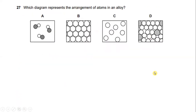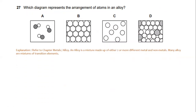Which diagram represents the arrangement of atoms in an alloy? Refer to the chapter on metals and alloys. An alloy is a mixture made up of either two or more different metals and non-metals. Many alloys are mixtures of transition elements. The answer for this question would be D.